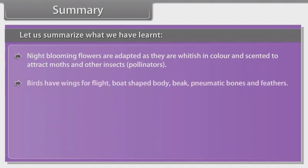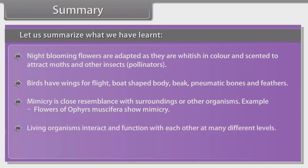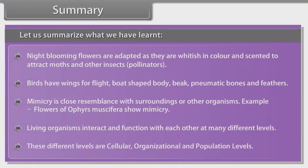Birds have wings for flight, boat-shaped body, beak, pneumatic bones and feathers. Mimicry is close resemblance with surroundings and other organisms. Example: Flowers of Ophyrus musifera show mimicry. Living organisms interact and function with each other at many different levels. These different levels are cellular, organizational and population levels.